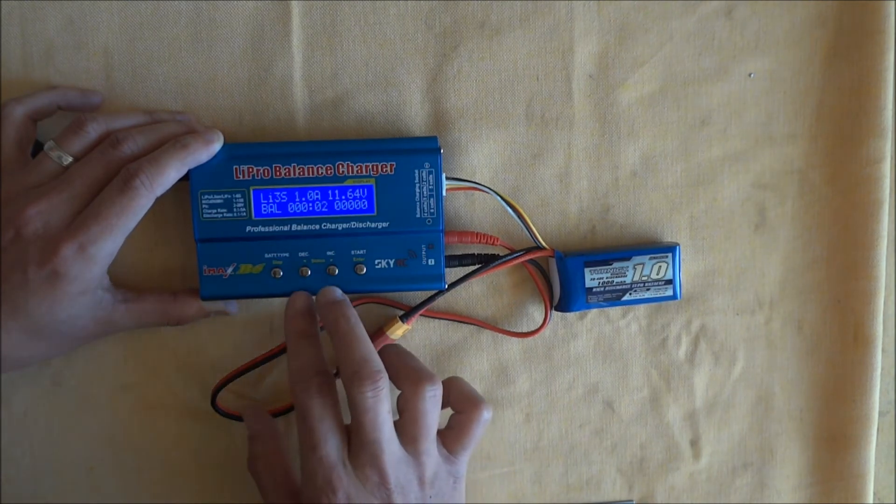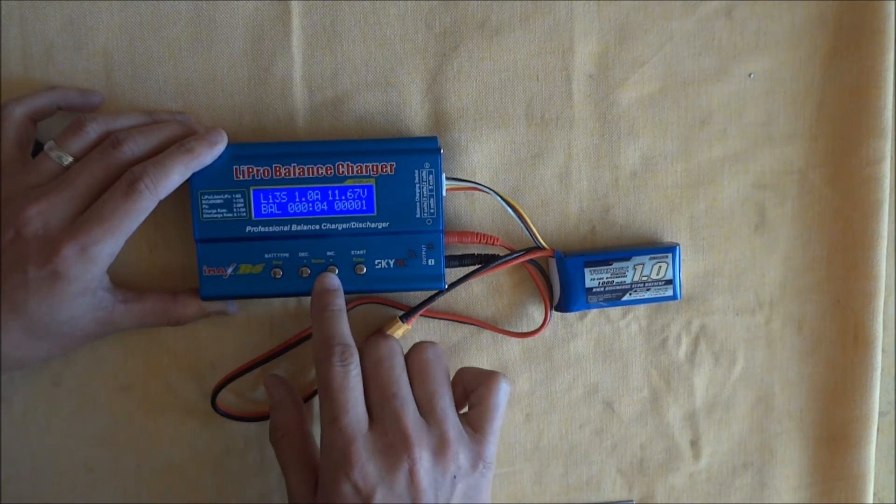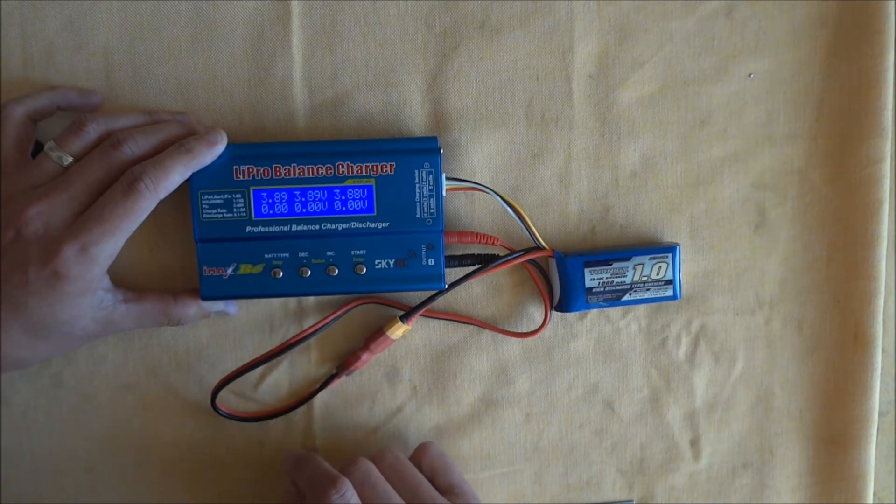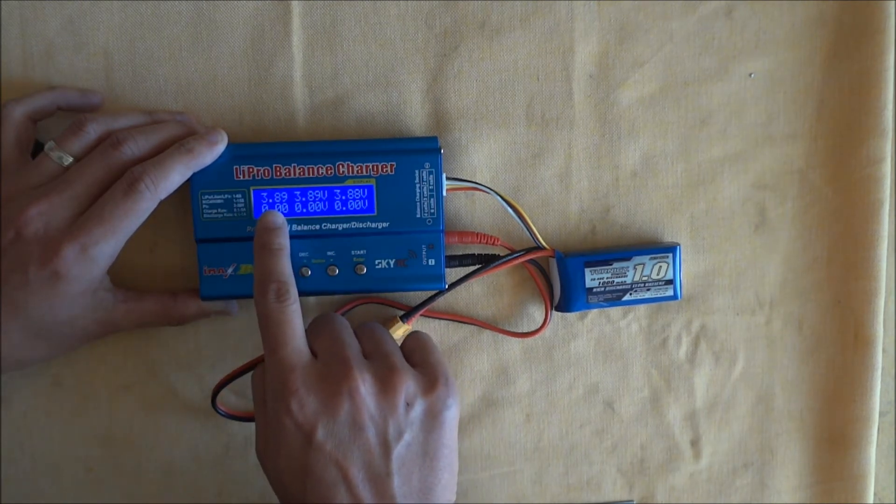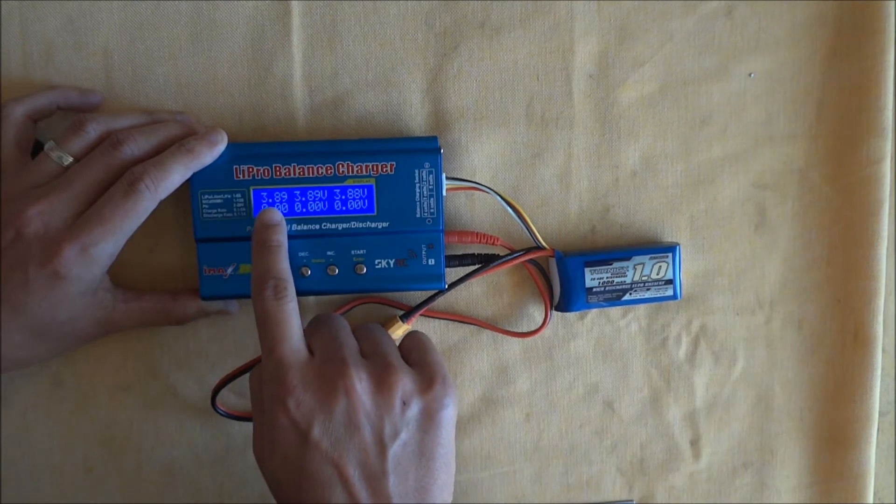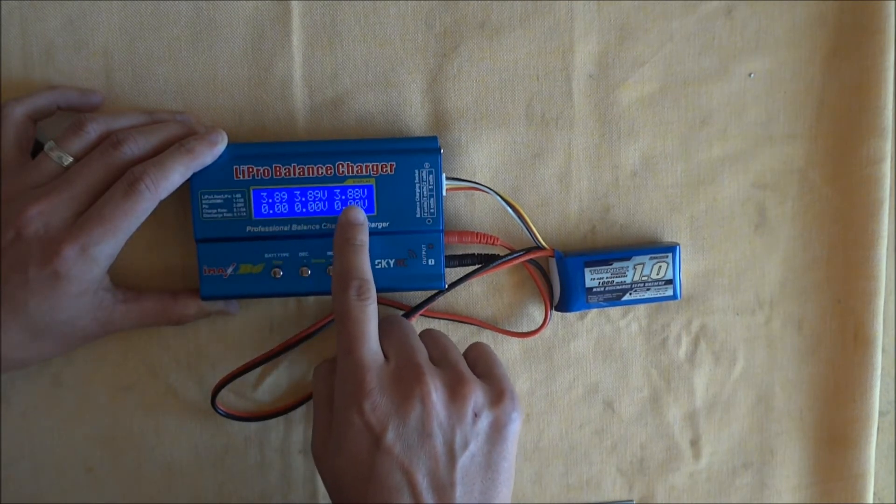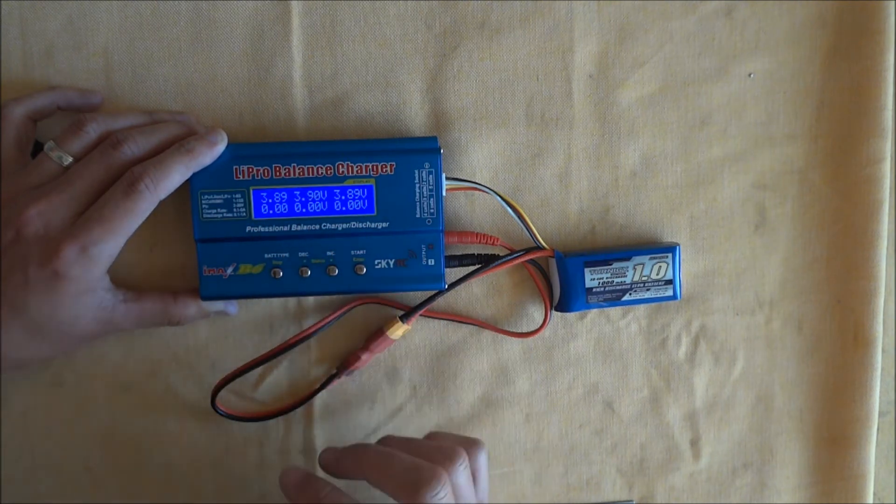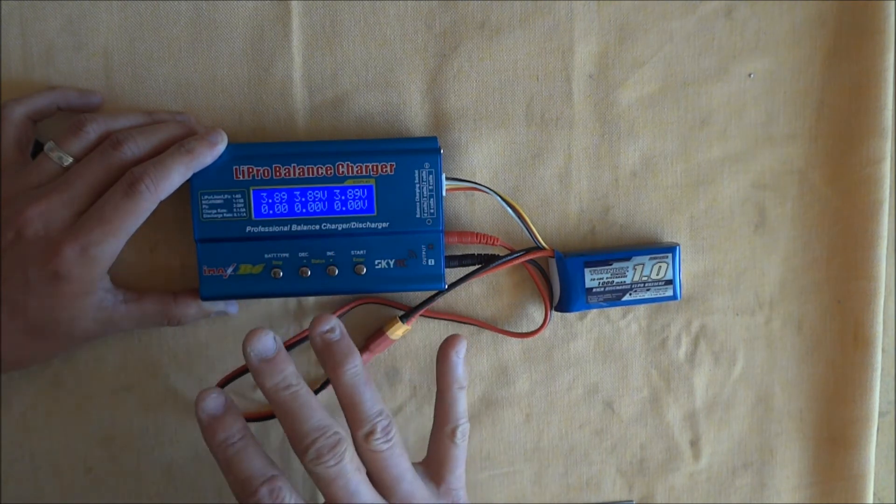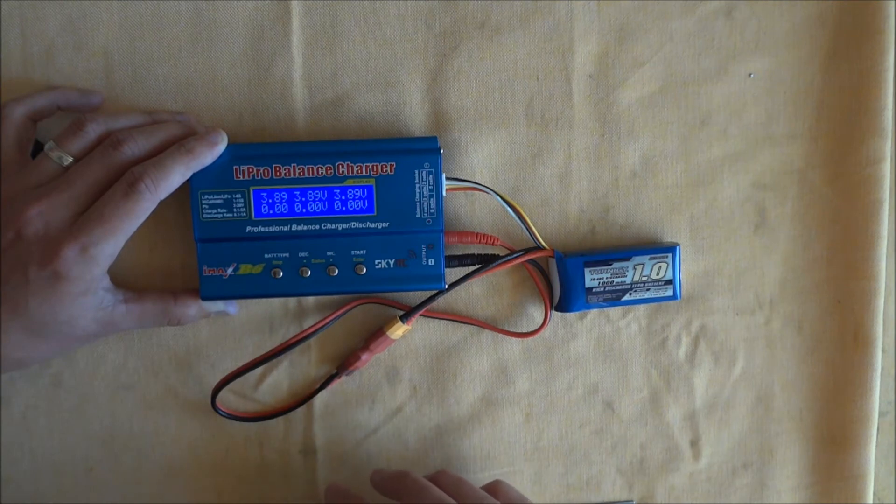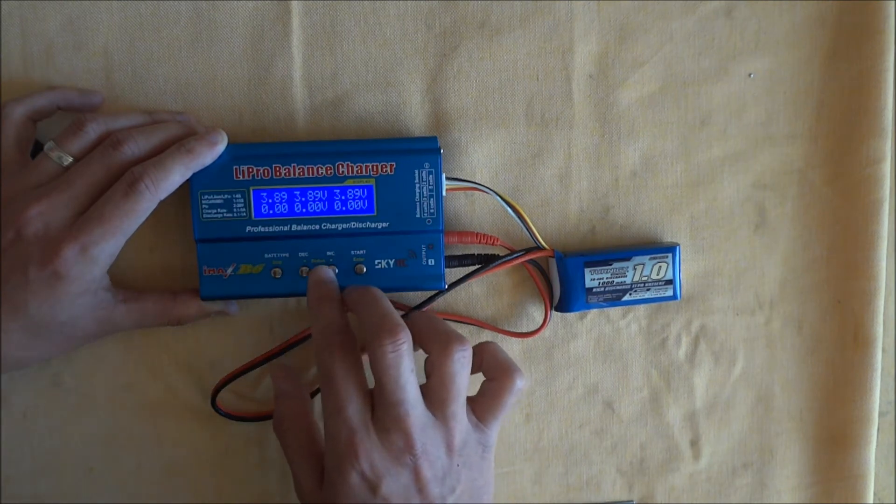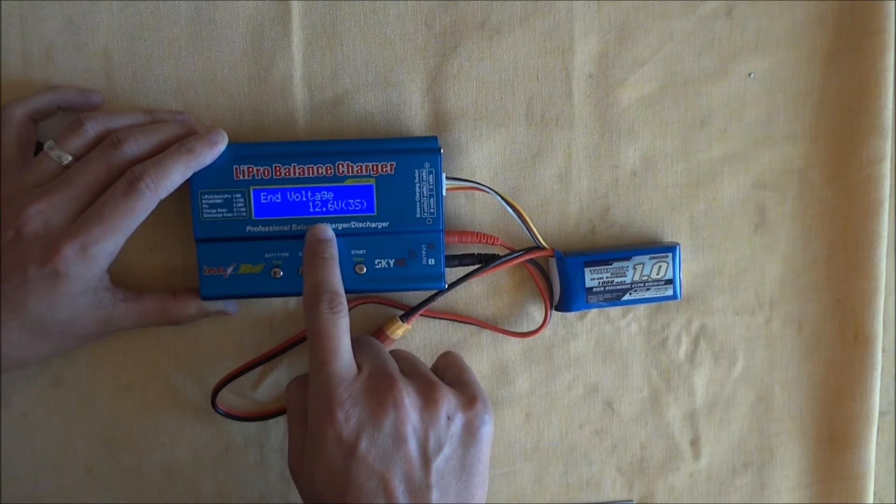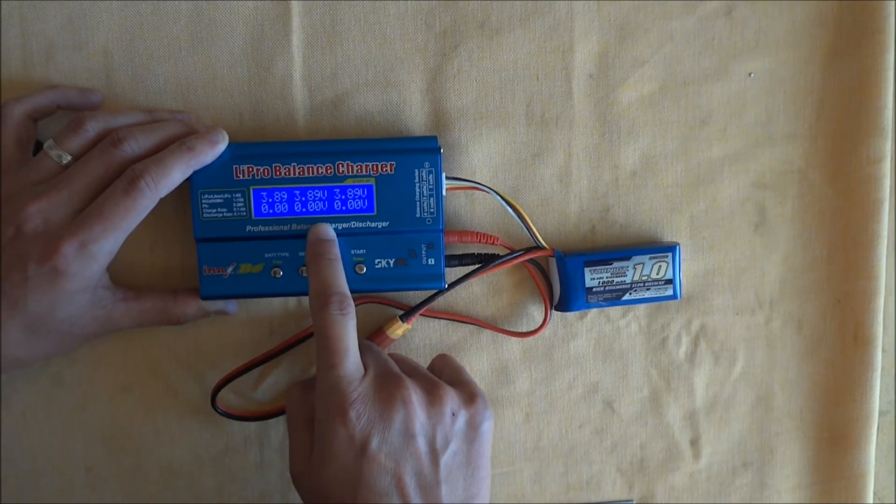So when it's charging, you can do some navigation things. If you press right, that's the advantage of your balance charge. You can actually see each cell with a 3S, first cell, second cell, third cell. And you can see the voltage of each individual cell, and you can see if there's any dodgy cells. They should be very similar to each other as it charges up. If we go left...